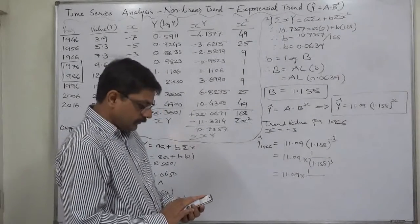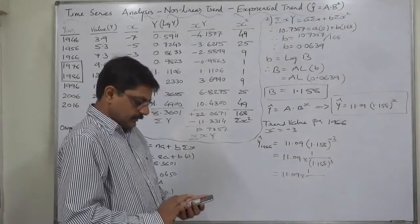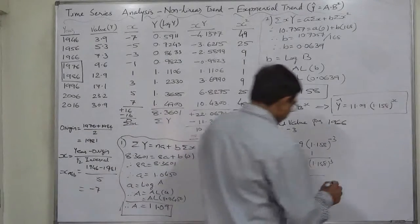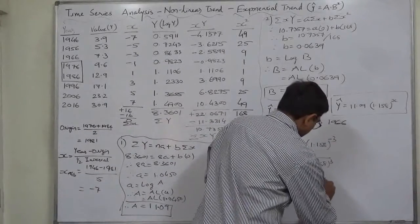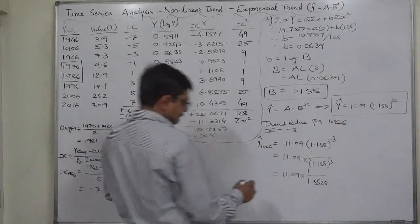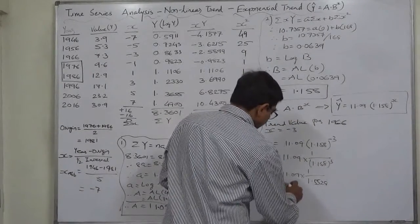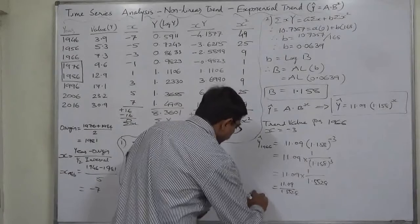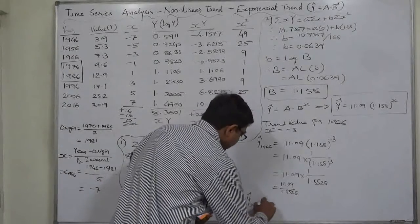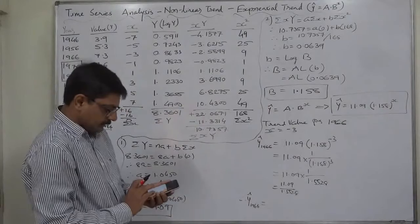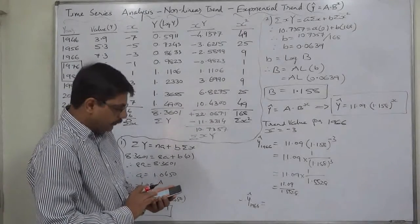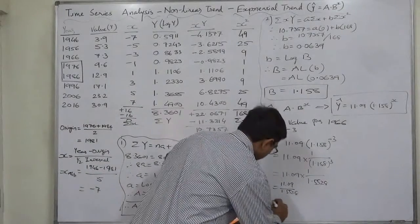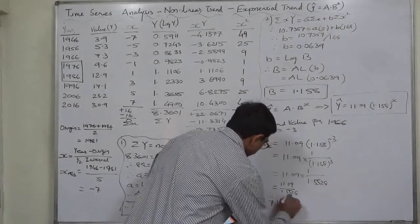Computing 1.158 cubed gives 1.5528. So the trend value for 1966 is 11.09 divided by 1.5528, which equals approximately 7.14.